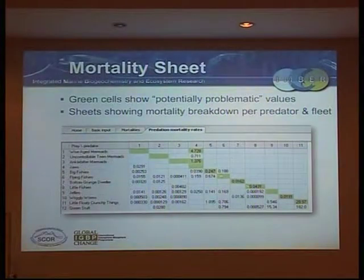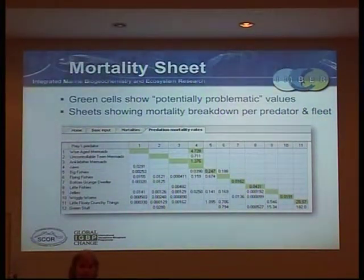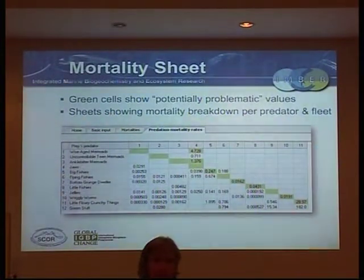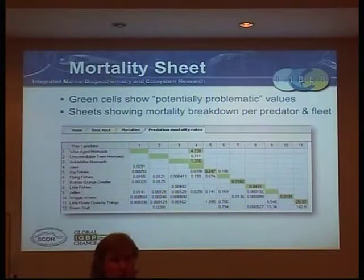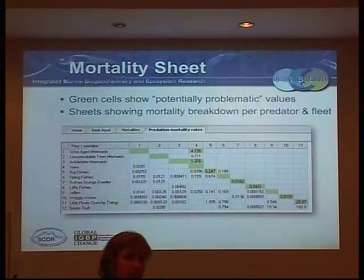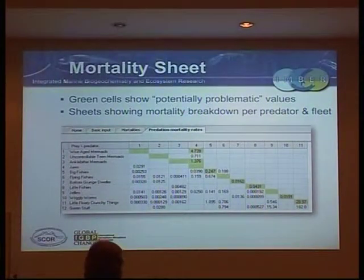Another rule of thumb, highlighted along the diagonal, is you shouldn't have more than about 10% cannibalism. There will be some species on Earth where they do have more than 10% cannibalism, but most animals don't eat more than 10% of their own population during feeding. If they do, you get yourself in a really tight loop — it makes mathematical sense but it doesn't make ecological sense. You have to be wary of those.